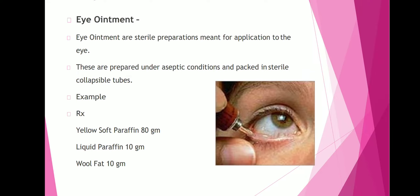Eye ointments are sterile preparations meant for application to the eye. These are prepared under aseptic conditions and packed in sterile collapsible tubes. Example formula: yellow soft paraffin 80 g, liquid paraffin 10 g, wool fat 10 g.